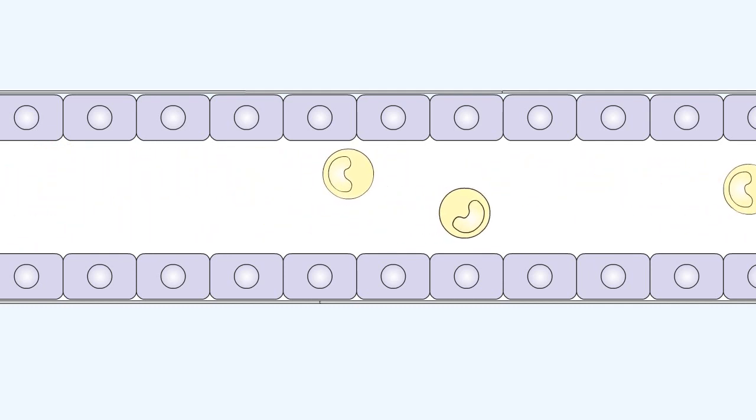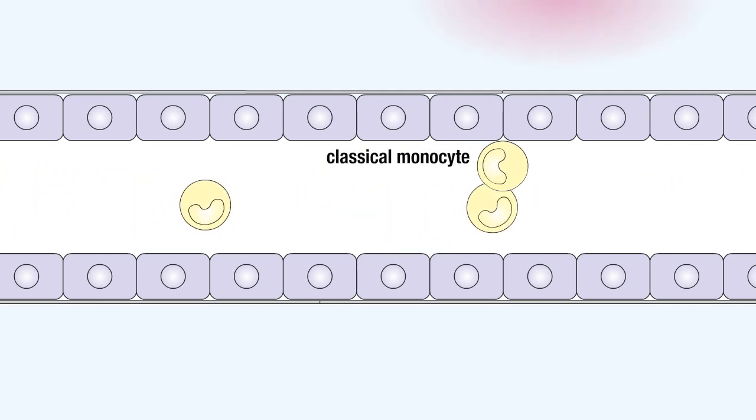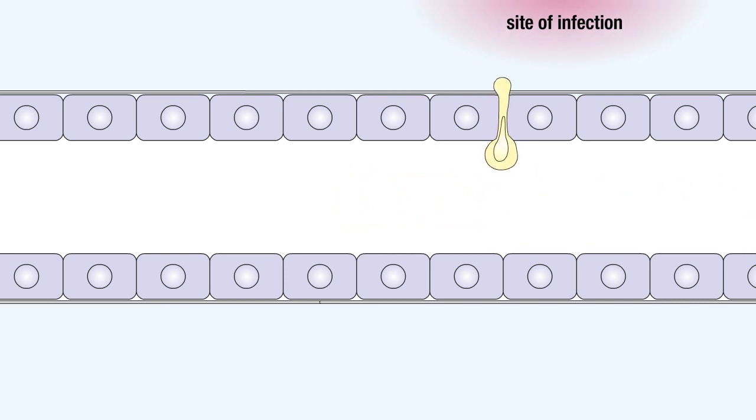In humans, about 90% of circulating monocytes are the so-called classical monocytes. At sites of infection, classical monocytes adhere to the endothelial cells, migrate through the vessel wall, and then differentiate into inflammatory monocytes and macrophages.